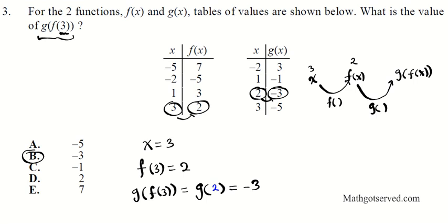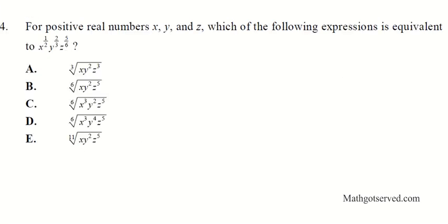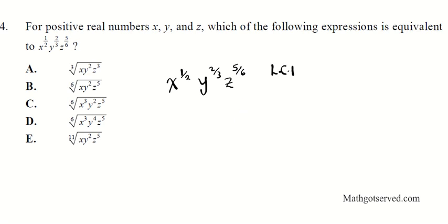Question 4 says: for positive real numbers x, y, and z, which of the following expressions is equivalent to x^(1/2) · y^(2/3) · z^(5/6)? We need to make all the denominators the same so we can have a common root, then extract that root. To do that we find the lowest common denominator of 2, 3, and 6, which is 6. The goal is to rewrite all exponents with denominator 6.